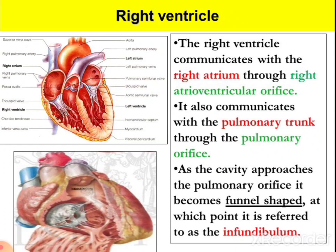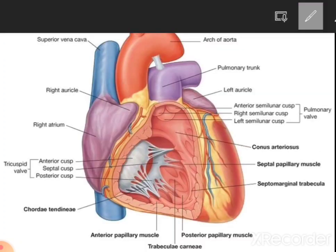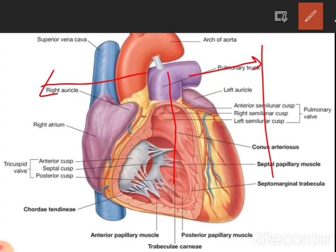The right ventricle communicates with the right atrium through the right atrioventricular orifice and with the pulmonary trunk through the pulmonary orifice. The right ventricle is about 4 to 5 mm thick and forms most of the anterior surface of the heart. It contains muscular bridges known as trabeculae carneae, which are helpful for conduction. The right ventricle is separated from the left ventricle by the interventricular septum. Blood passes from the right ventricle through the pulmonary valve into the pulmonary trunk, which divides into right and left pulmonary arteries for each lung.